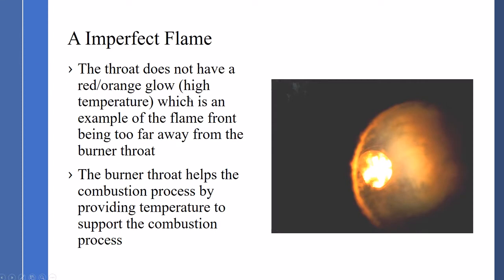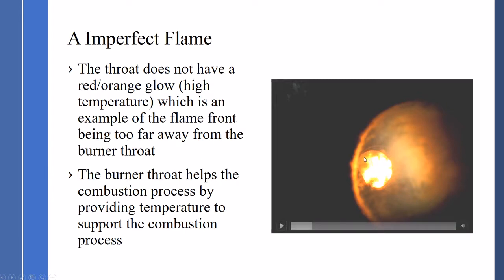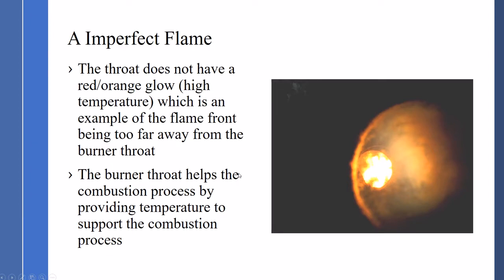In a perfect flame, the throat does not have a red-orange glow, or the high temperature. The flame temperature here is about 2800 degrees. With this high temperature, the burner throat should be that red-orange color. The flame front being too far away from the burner throat — if the flame front is too far away, the radiation or heat does not get to the burner throat, which does not heat it up evenly.